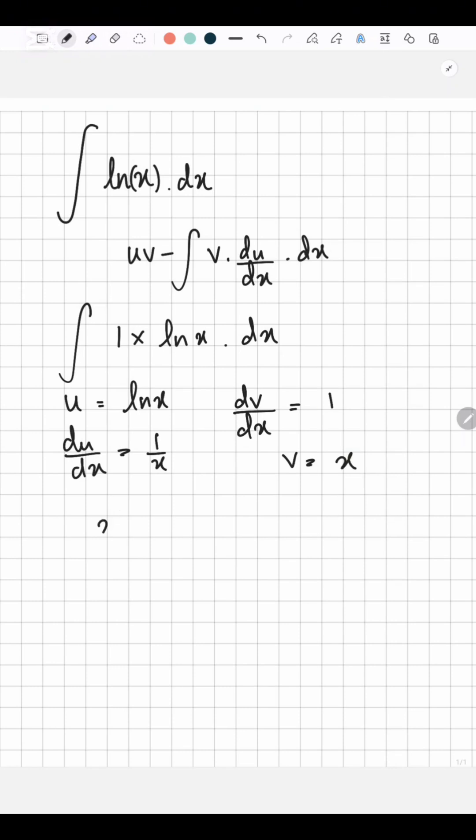So we are going to use the formula now. So uV is x ln(x) minus the integration of x times du/dx is 1/x times dx. So it's x ln(x) minus the integration of 1, giving you an answer of x ln(x) minus x plus c. This is your answer.